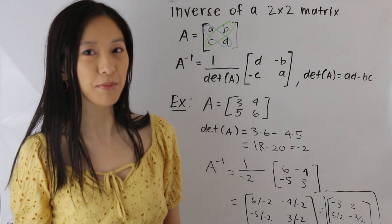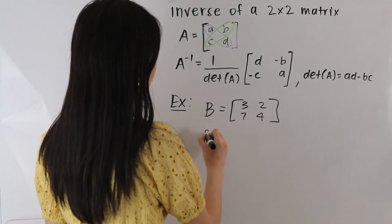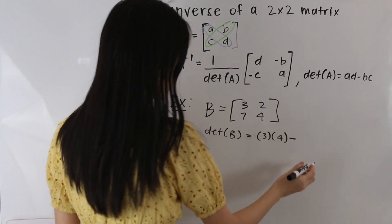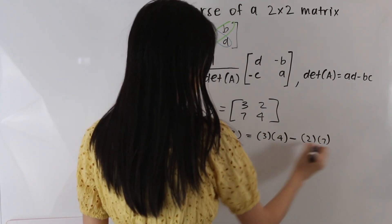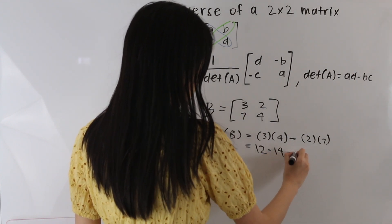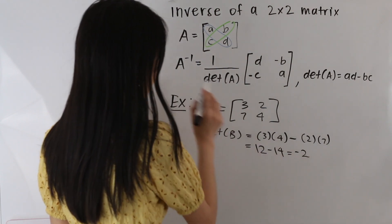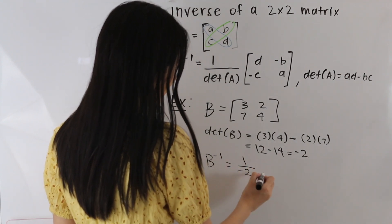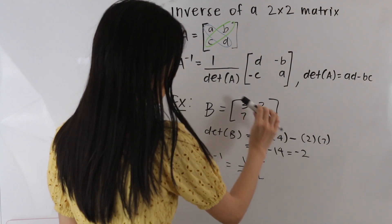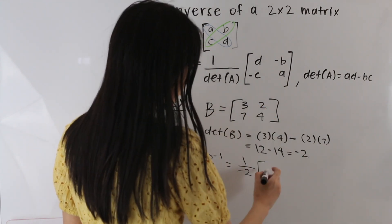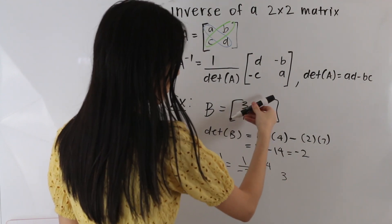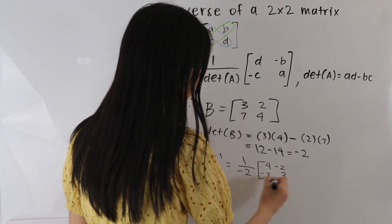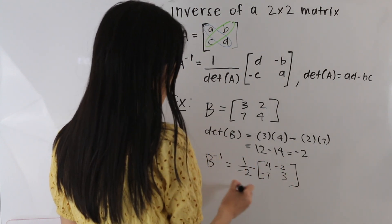So let's go ahead and take a look at one more example. In this next example, we have matrix B. Let's start out by taking its determinant. We get that the determinant of B is equal to negative 2. So now let's find our inverse. The inverse of B is equal to 1 over the determinant of B. We flip the positions of the elements on this diagonal — so we have 4 here and 3 here. And for this diagonal, the elements stay in the same place but we take the negative of those values, so we have negative 2 here and negative 7 here.